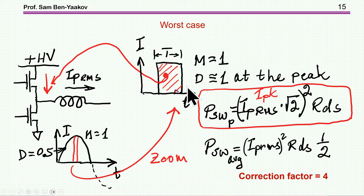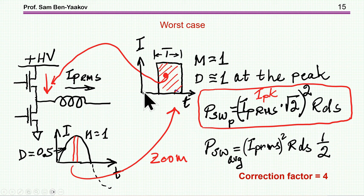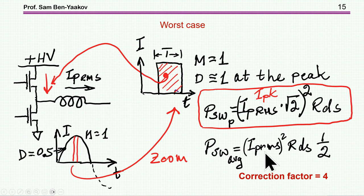The question is: by how much is the conduction loss higher? There are two problems. First, the current magnitude is the peak value — I_peak = √2 · I_RMS — so you get twice the power. Second, the power is not divided between the two sides; for this particular period, essentially all the power goes to one side. Comparing this to the average case, you see a correction factor of 4. That is a lot.